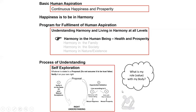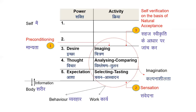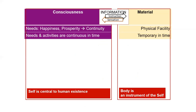We have already talked about the coexistence between self and body and the transaction between the self and body. We talked about this transaction in terms of information — the self, which is a unit of consciousness, gives some instruction to the body, which is a unit of material. This decision is taken by the self. Similarly, the self reads some sensation from the body, and again the decision is taken by the self as to which sensation to be read.